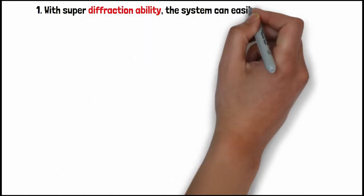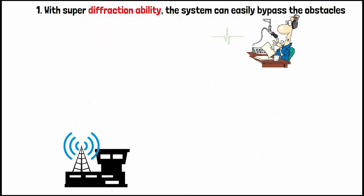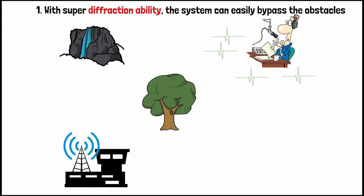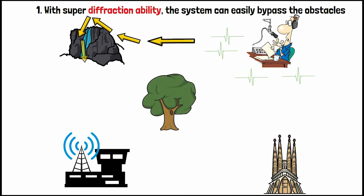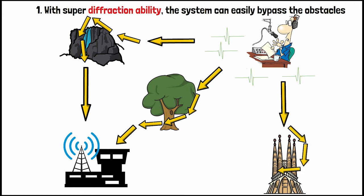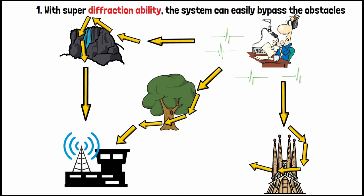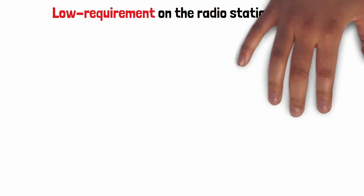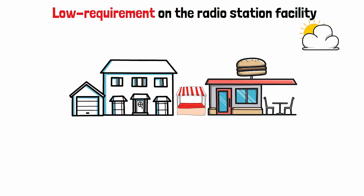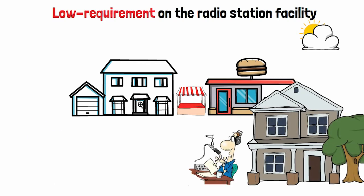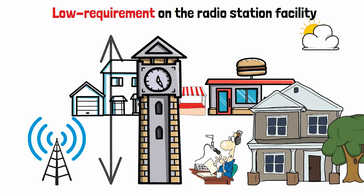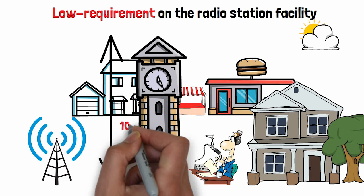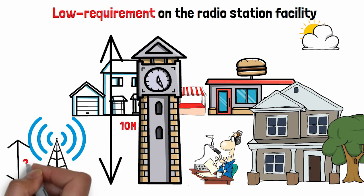To start with, the FM User STL system can easily bypass any obstacles with its super diffraction ability, such as mountains, trees, and buildings, and transfer the signals to the station. With such a low requirement on the radio station facility, you can still perfectly build your own radio station, even if the radio tower you rent is only one third of the height of the surrounding buildings.